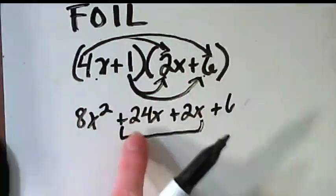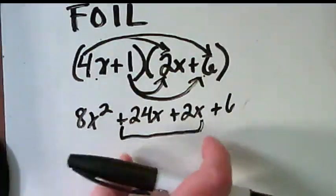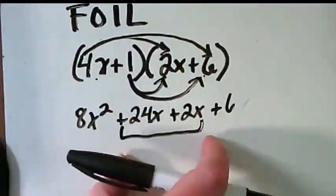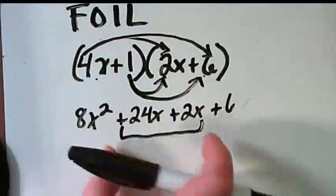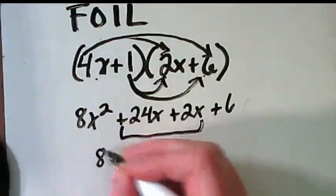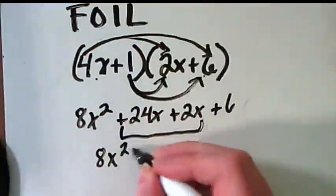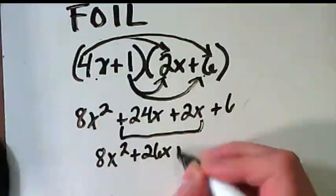So what we have down here is showing our x terms are showing up in the middle, just like in the box method. They show up diagonally. And we can combine like terms. And we get 8x squared plus 26x plus 6.